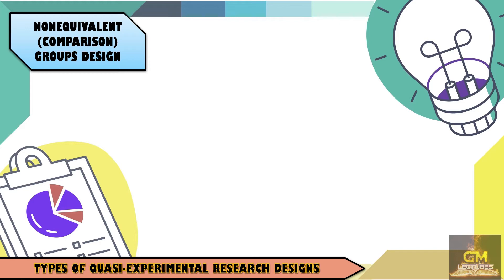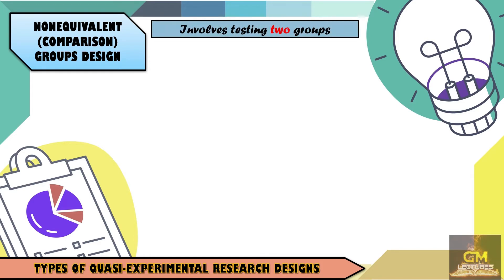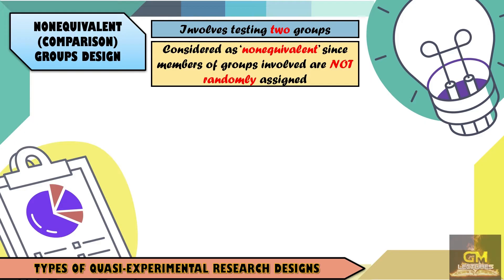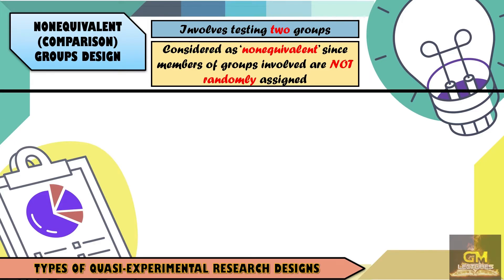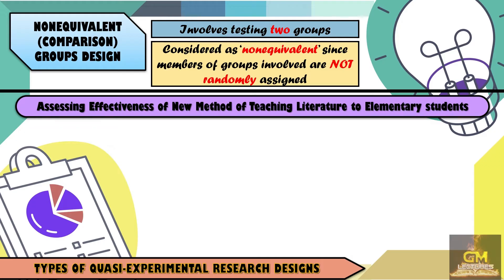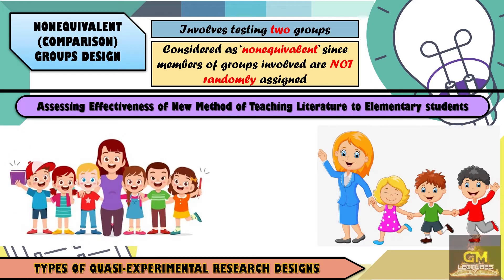First, let's have the non-equivalent comparison groups design. The non-equivalent comparison groups design involves testing two groups. Also, it is considered as non-equivalent since the members of the groups involved are not randomly assigned. With this in mind, let's consider this example wherein we have a study that aims to assess the effectiveness of a new method of teaching literature to elementary students. For this particular type of quasi-experimental research, there would be two groups.